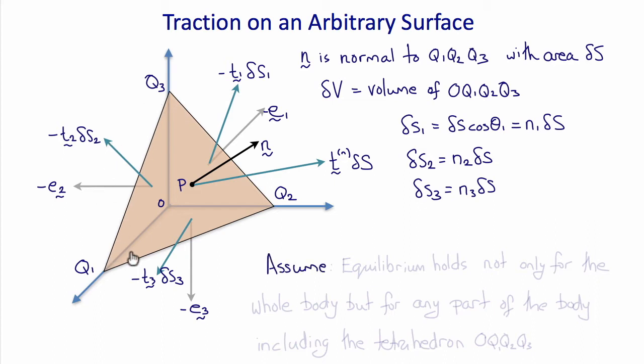Now let's assume that equilibrium holds not only for the body as a whole, but for any individual small part of the body, including the arbitrary tetrahedron O, q1, q2 and q3.